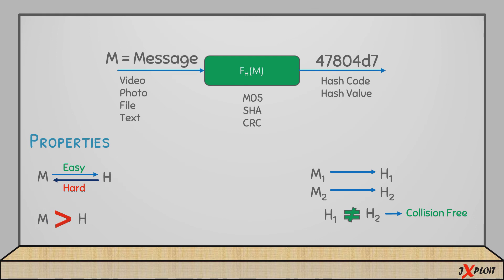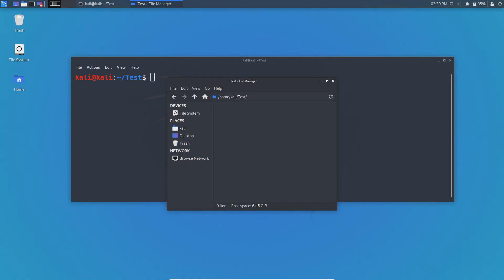The third property is that the length of the hash value is always less than the original message — because of that, the hash function is also known as a compression function. The fourth property is that the hash value has a fixed length. The hash value of each message will be unique, but the length of each hash value will always be the same.